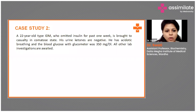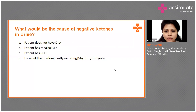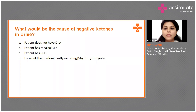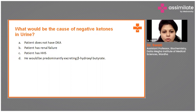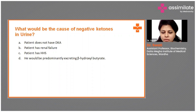Now I put forward the questions on this case study. What would be the cause of negative ketones in urine? Does the patient not have DKA, does the patient have renal failure, does the patient have HHS, or would the patient be predominantly excreting beta-hydroxybutyrate?